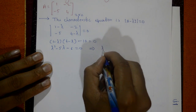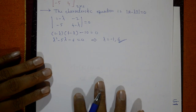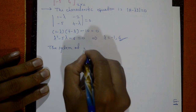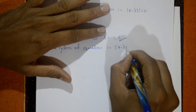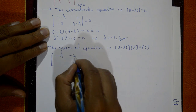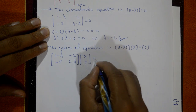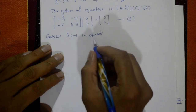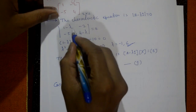Factorizing λ² − 5λ − 6 = 0 gives eigenvalues λ = −1 and λ = 6. The system of equations is (A − λI)x = 0, that is [[1−λ, −2], [−5, 4−λ]] times [x, y] = [0, 0]. This is equation number 1. Case 1: put λ = −1 in equation number 1.